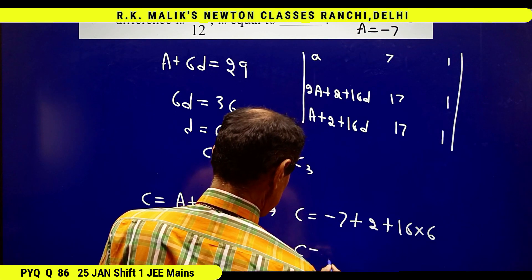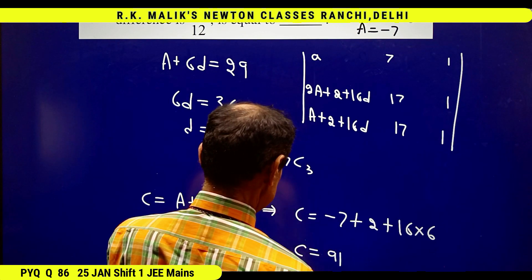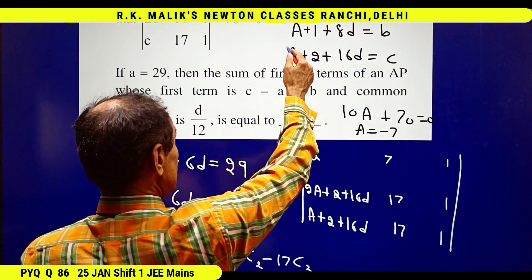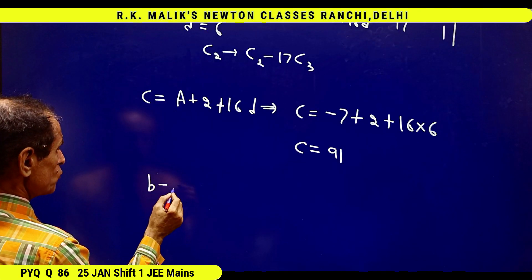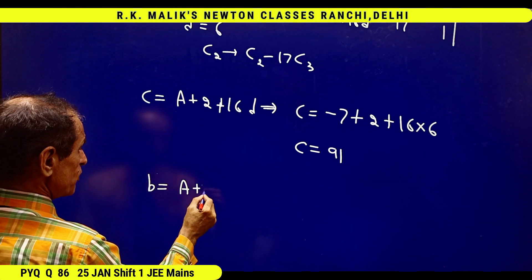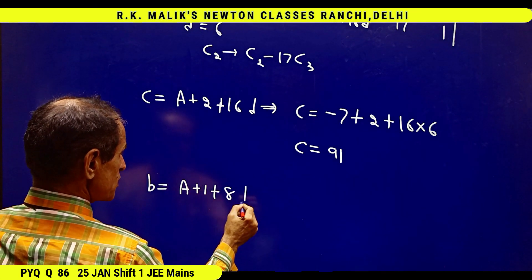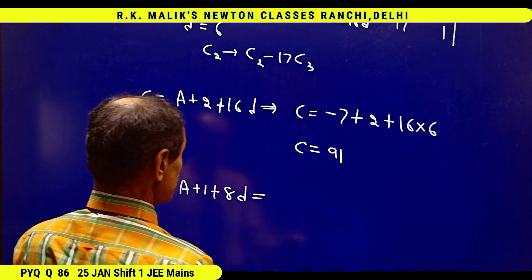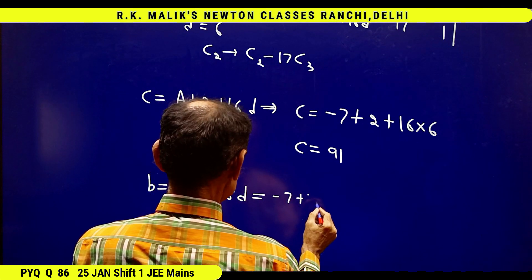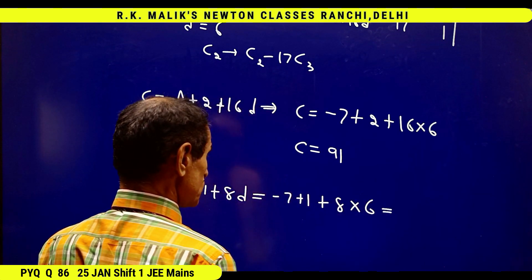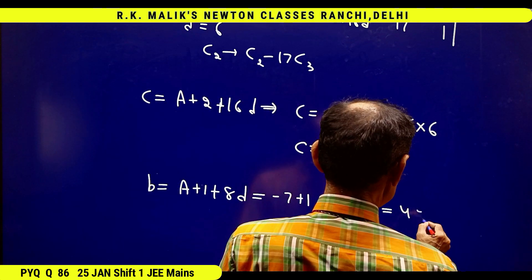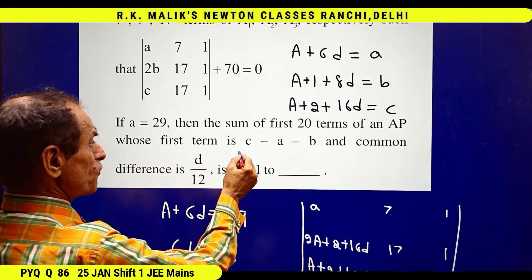And b was A plus 1 plus 8D, therefore b equals A plus 1 plus 8D, which implies minus 7 plus 1 plus 8 times 6 equals 42.